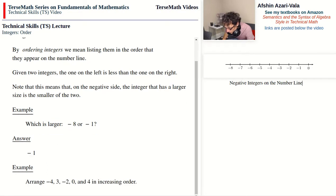Sometimes we are given a set of numbers and we are asked to arrange them in either increasing order or decreasing order. Such as this problem: arrange negative 4, 3, negative 2, 0, and 4 in increasing order. Now increasing order means from smallest to largest. So as we go through the list, the size of the numbers increase, and therefore we should start with the smallest of the numbers.